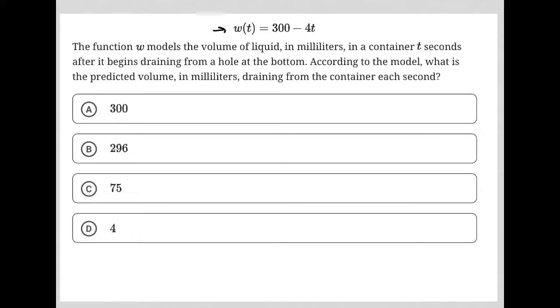So this question says W of T equals 300 minus 4T. The function W models the volume of liquid in milliliters in a container T seconds after it begins draining from a hole at the bottom. According to the model, what is the predicted volume in milliliters draining from the container each second?